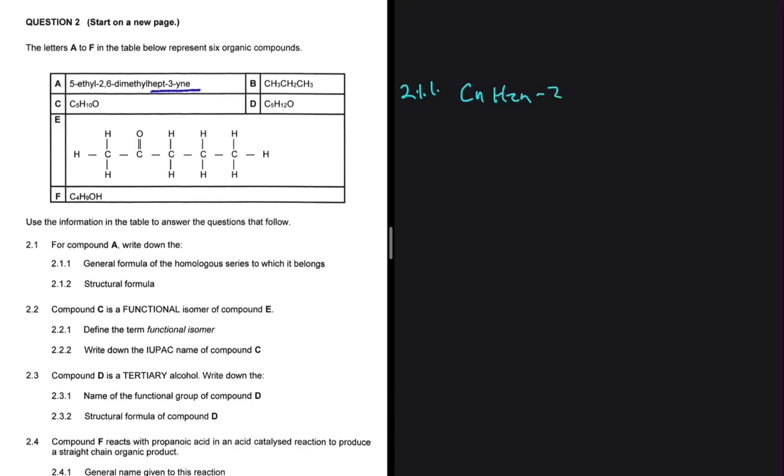If it was an alkene, it would be CnH2n. And if it was an alkyne, it would be CnH2n-2.